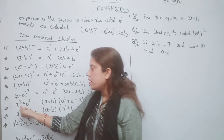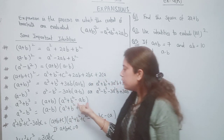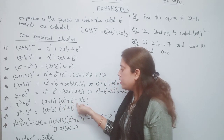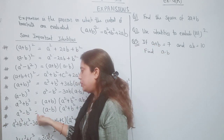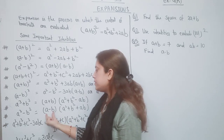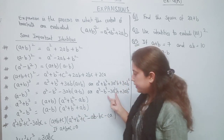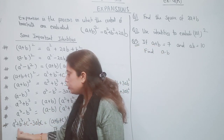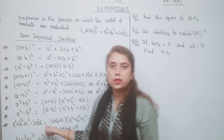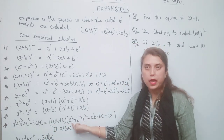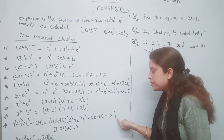The next identity: a³+b³ = (a+b)(a²+b²-ab). And a³-b³ = (a-b)(a²+b²+ab). The last one: a³+b³+c³-3abc = (a+b+c)(a²+b²+c²-ab-bc-ca).